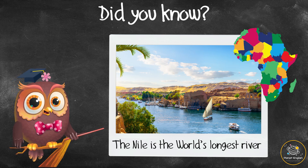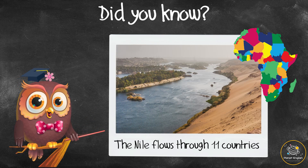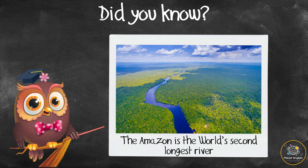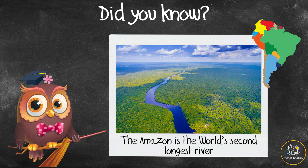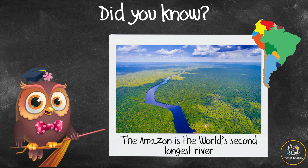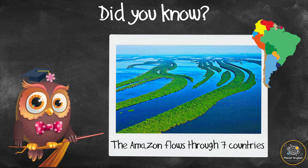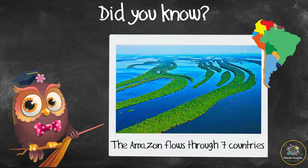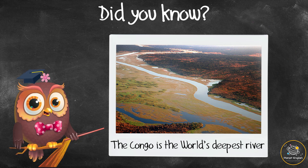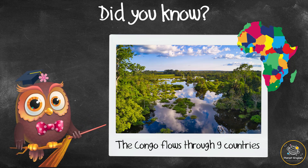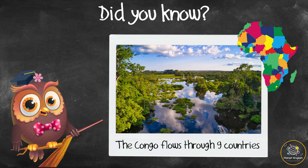Did you know the Nile River in Africa is the longest river in the world at 6,650 kilometers long? It flows northward from central Africa through 11 countries to the Mediterranean Sea. The Amazon River in South America is 6,400 kilometers long, making it the second longest river in the world. Its source is in the Andes Mountains and it flows through seven countries before reaching the Atlantic Ocean. The Congo River in Africa is the deepest river in the world, flowing through nine countries and reaching depths of 230 meters at some points.